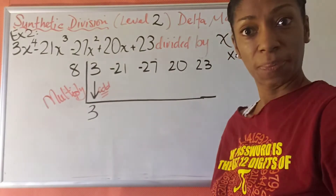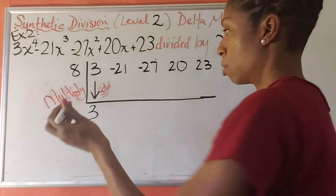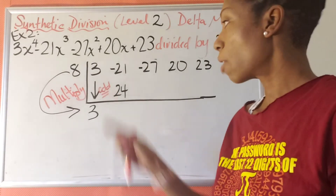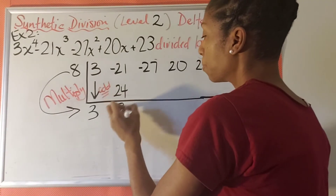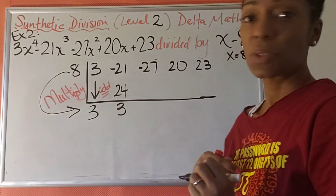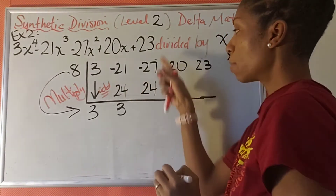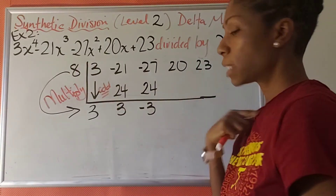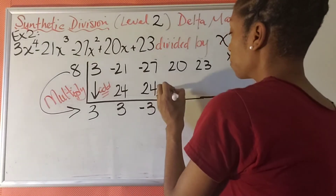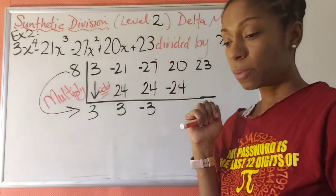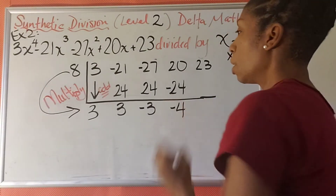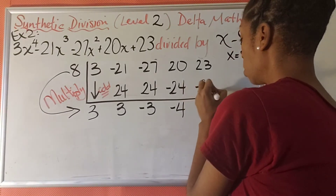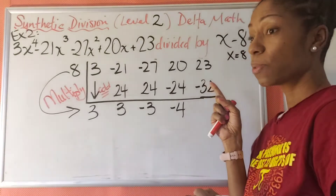What's 8 times 3? 24. Multiply: 24. And then add: negative 21 plus 24 is 3. Then we multiply — 8 times 3 is 24 — and then add: negative 27 plus 24 is negative 3. Multiply: 8 times negative 3 is negative 24. Then 20 minus 24 is negative 4. And then we multiply: 8 times negative 4 is negative 32. And then we add: 23 minus 32 is negative 9.